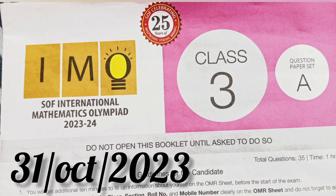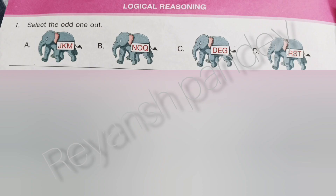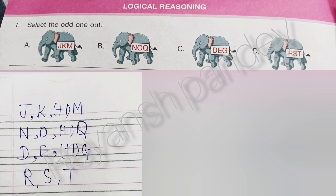IMO 2023-24, Class done, Set A. Select the odd one out. The answer is D.